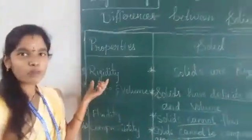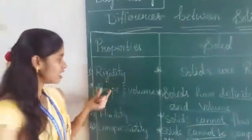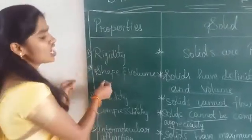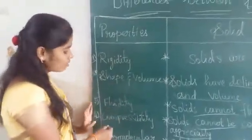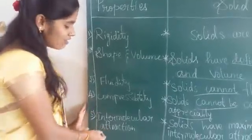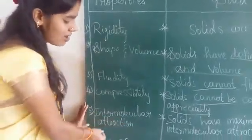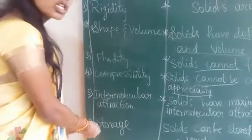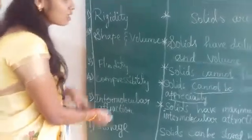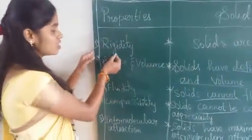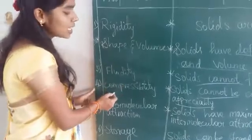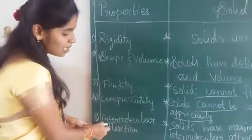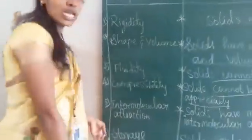The six properties we will discuss are: first, rigidity; second, shape and volume; third, fluidity; fourth, compressibility; fifth, intermolecular attraction; and sixth, storage.